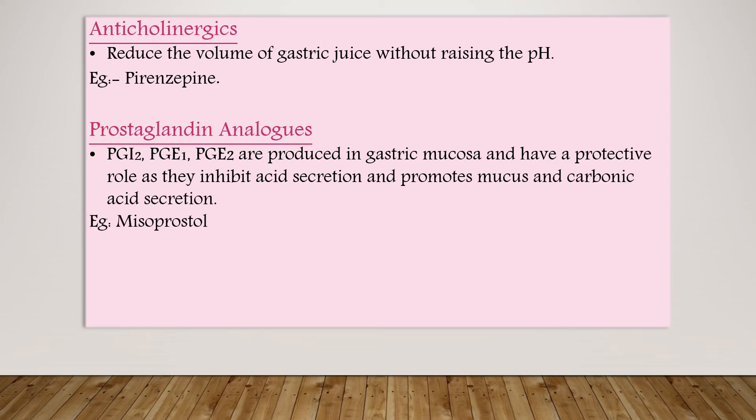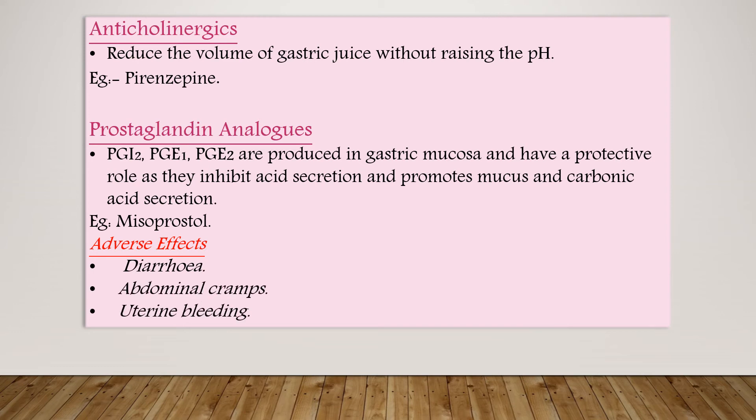The next class is prostaglandin analogs. Prostaglandin E1, E2, and I2 are produced in the gastric mucosa and have a protective role: they inhibit acid secretion and promote mucus and bicarbonate secretion. An example is misoprostol. Adverse effects of prostaglandin analogs are diarrhea, abdominal cramps, and uterine bleeding.